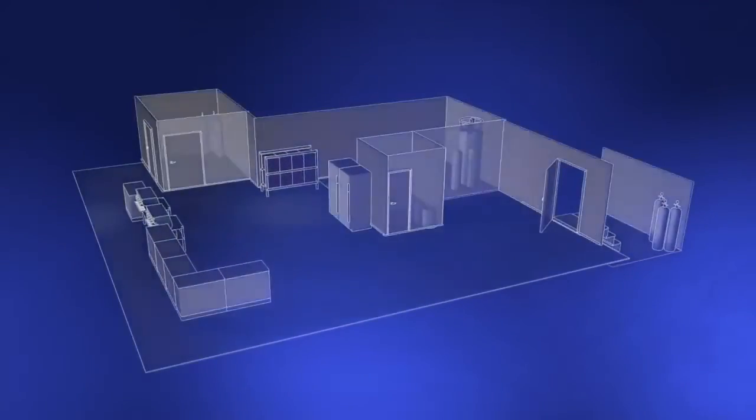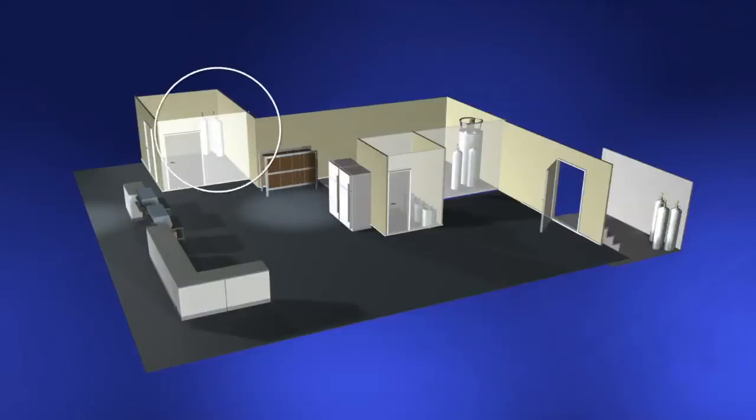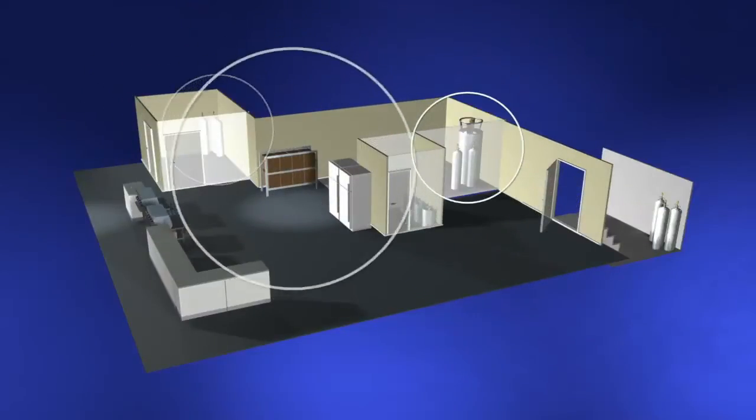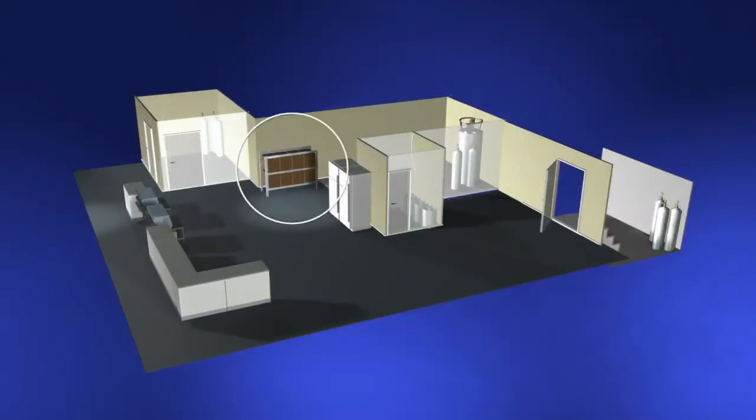In order to make a proper recon, you have to check where the different distribution points are. Gas bottles, bulk CO2 tank, BIBs or bag in the boxes. And if there is draft beer being served, where the beer cooler is located.